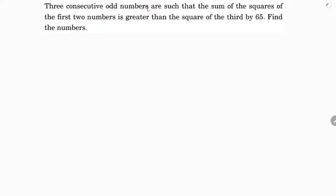Three consecutive odd numbers are such that the sum of the squares of the first two numbers is greater than the square of the third by 65. Find the numbers.